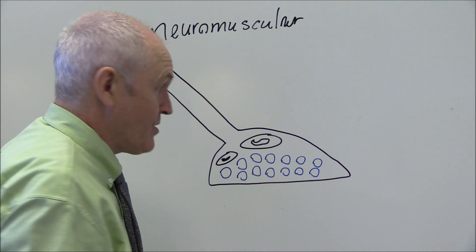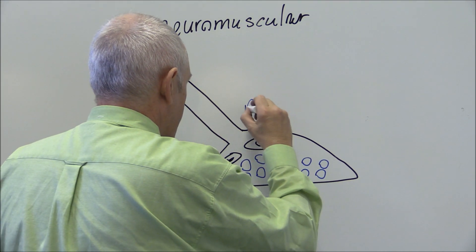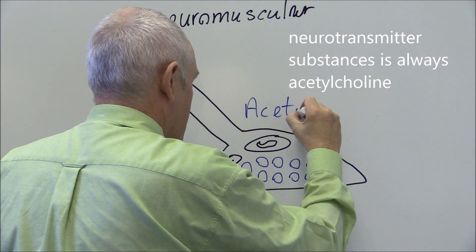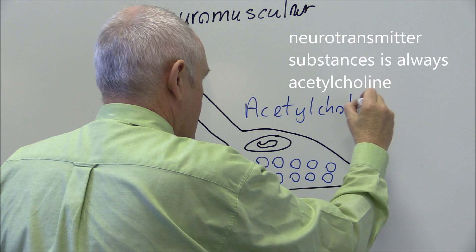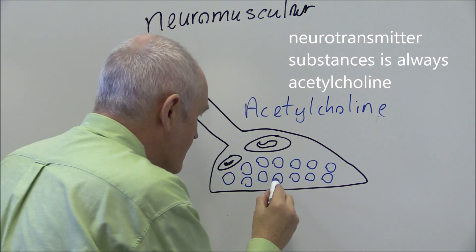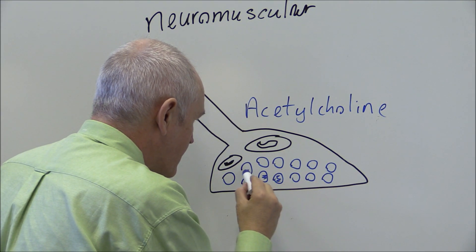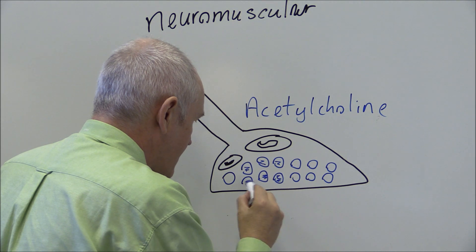And the neuromuscular junction chemical transmitter is always the acetylcholine. So these are filled with the acetylcholine that is the chemical transmitter.